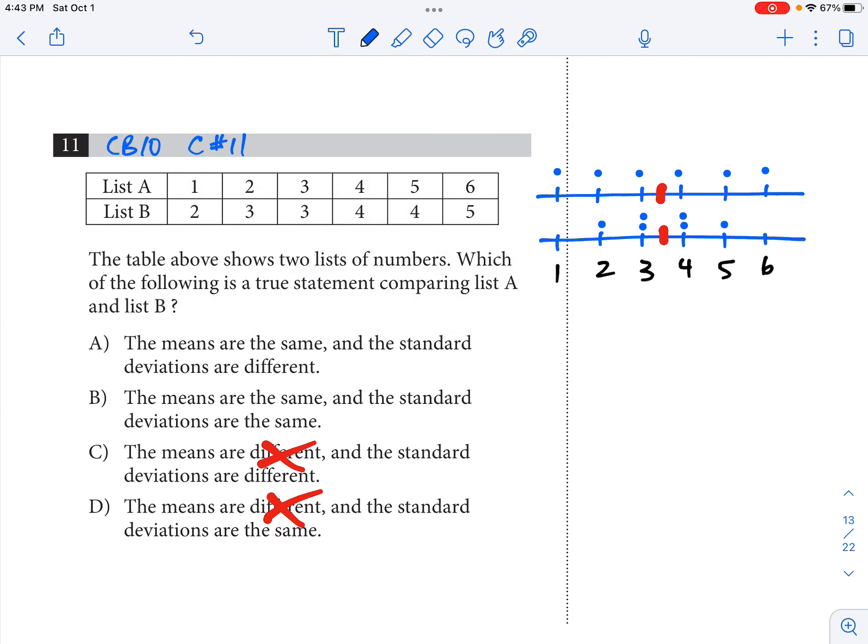Standard deviation measures how spread out your numbers are. If you look at these two dot plots, you can think about the range. You probably know what range means—it's the maximum number minus the minimum number. So in List A, the range is 5 because it's 6 minus 1. And in List B, the range is only 3. It's 5 minus 2.